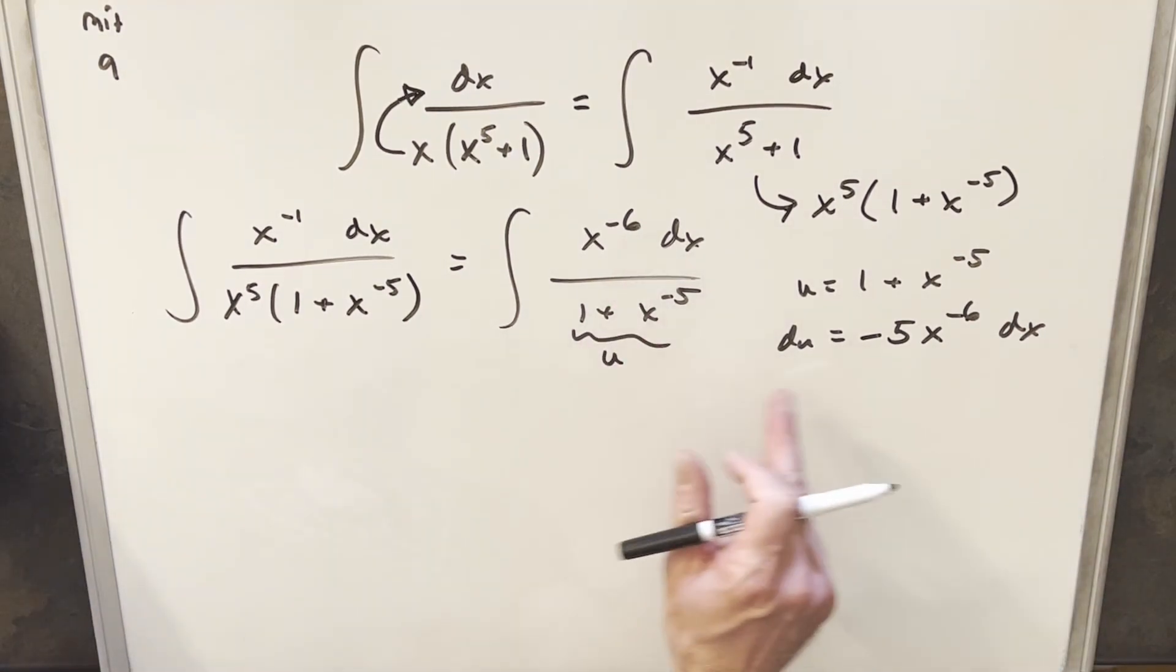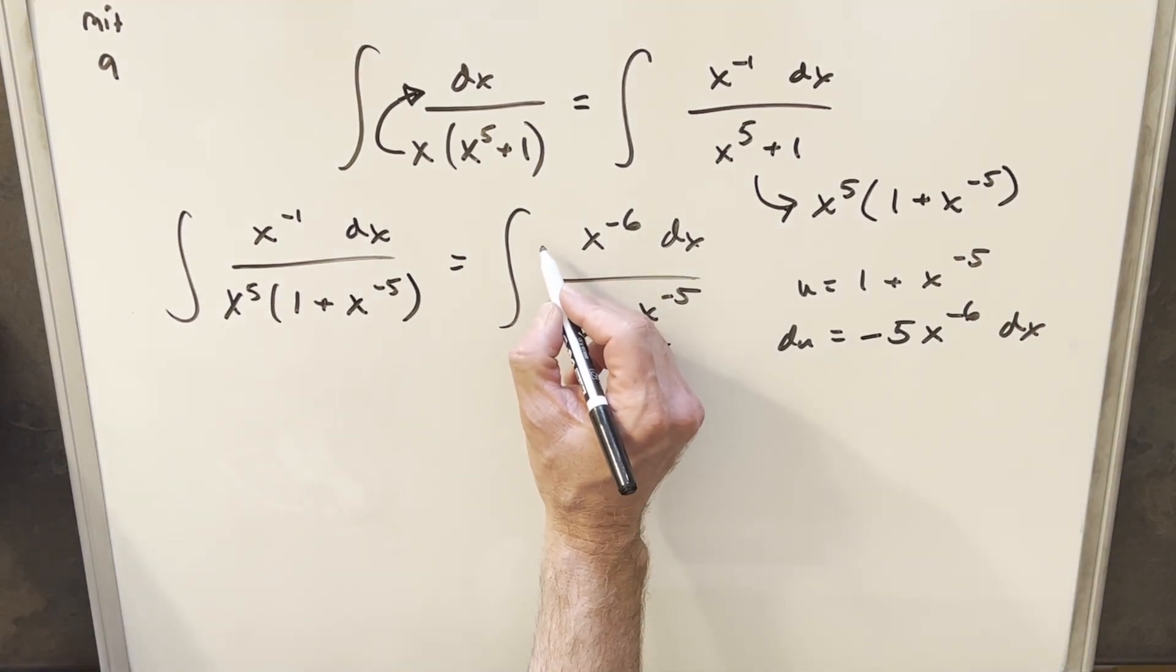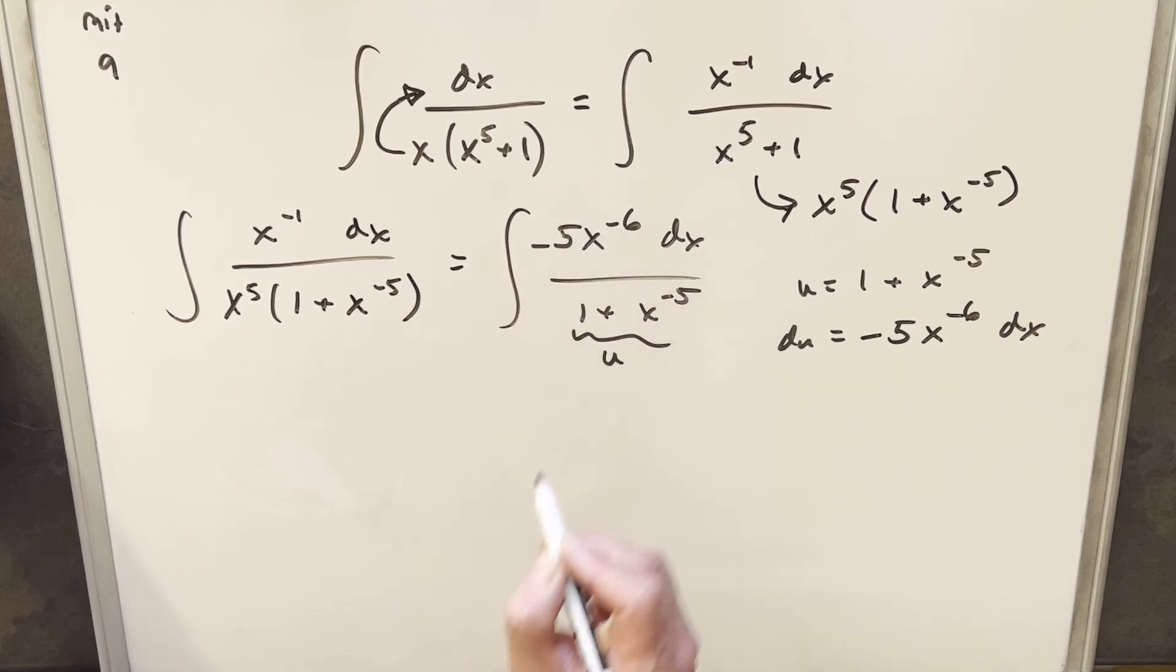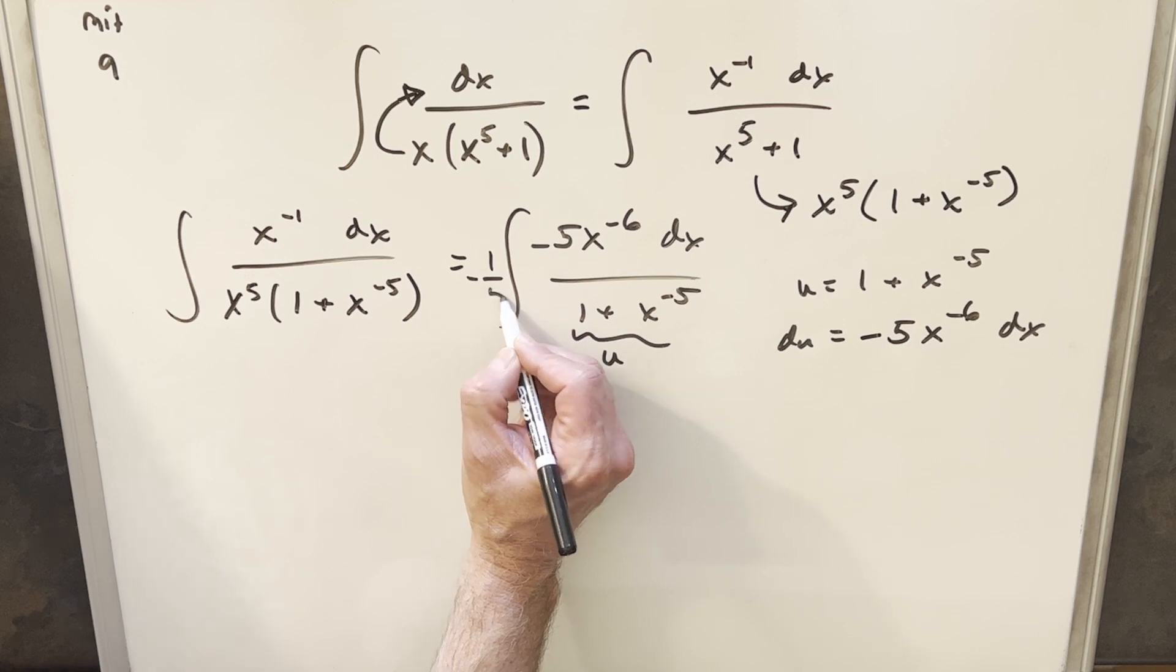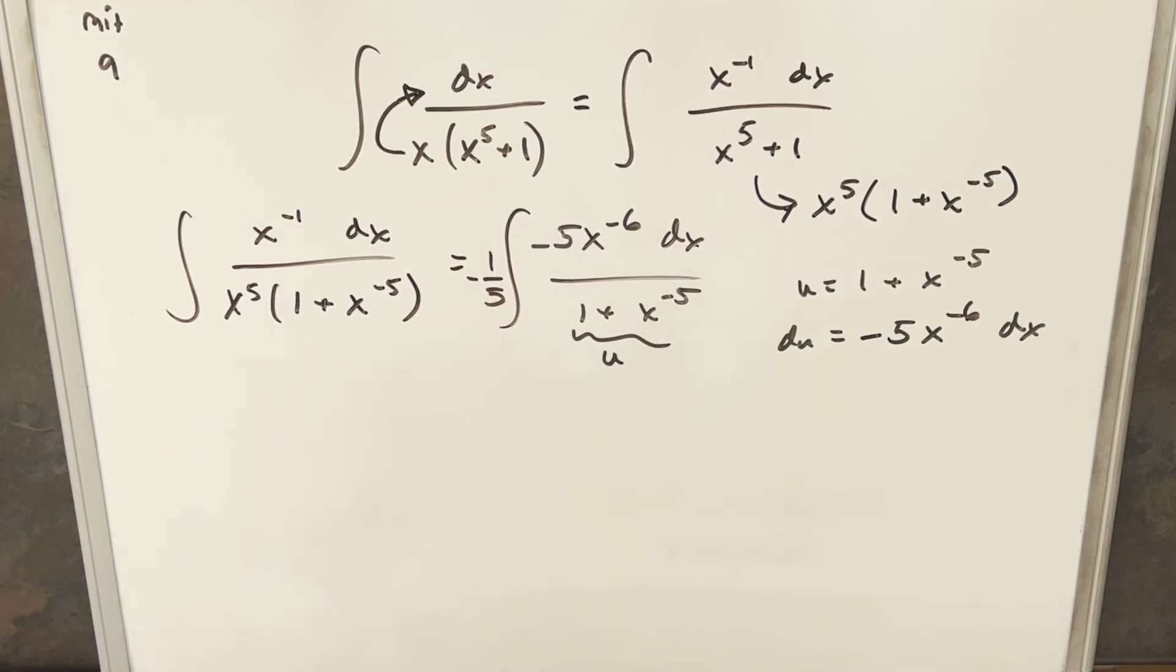And what I'm going to do is I'm going to make my numerator match this exactly just by multiplying by minus 5. But so that I don't change it, we'll multiply by a minus 1 fifth over here. So we're actually just multiplying by 1.